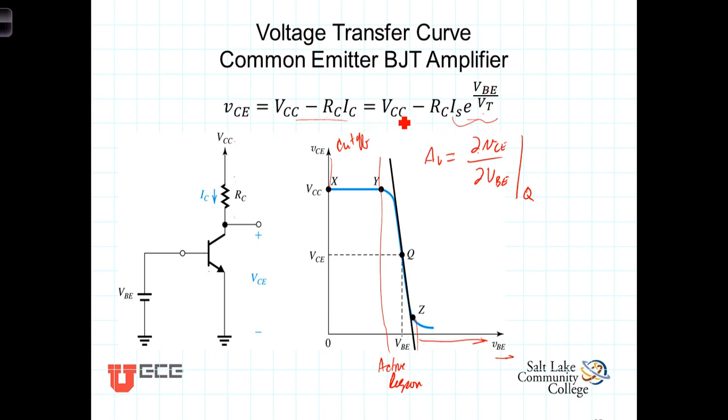Of course, the derivative of the constant is zero, and we're left with a negative sign times R sub C times I sub S times the derivative of this, which is E to the VBE over VT multiplied by the derivative of the exponent, which is 1 over VT.